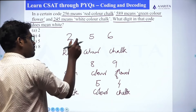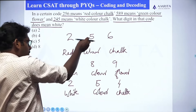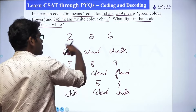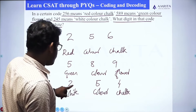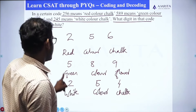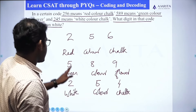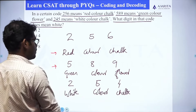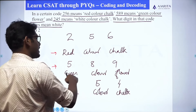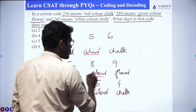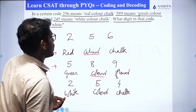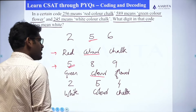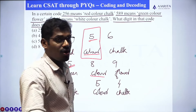In the first case, red color chalk is coded with 2-5-6. For the last one, white color chalk is coded with 2-5-4. Taking the first and second statements: red color chalk and green color flower — what is common? Color is common. Looking at their codes, 2-5-6 and 5-8-9 — what is common? 5 is common, which means color is coded with 5.